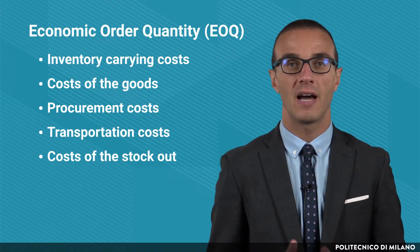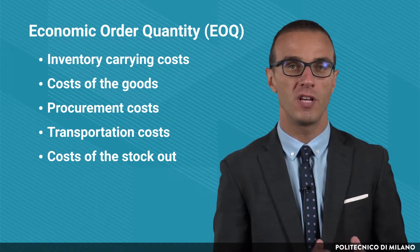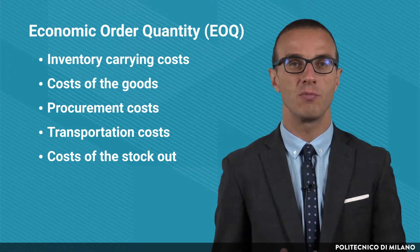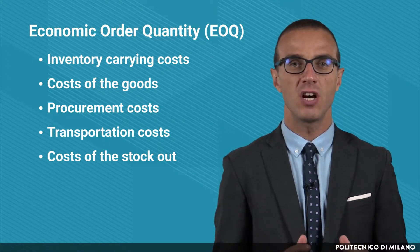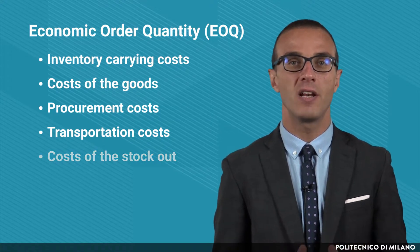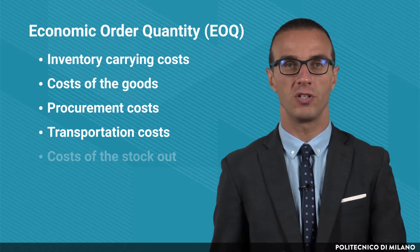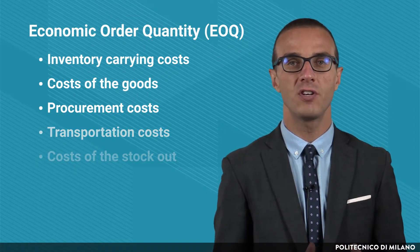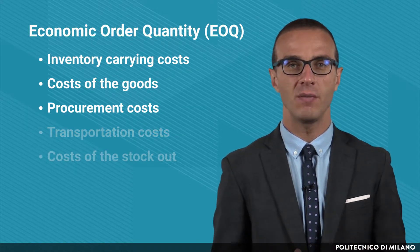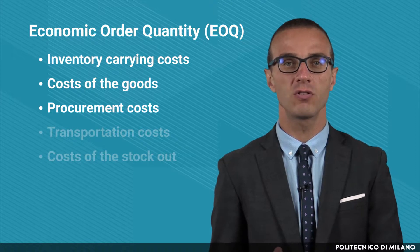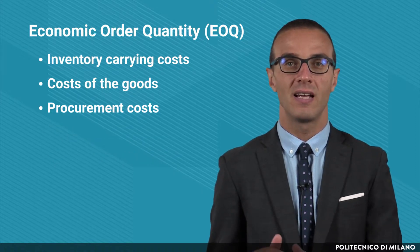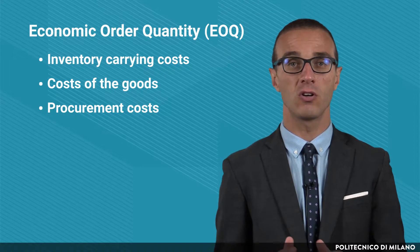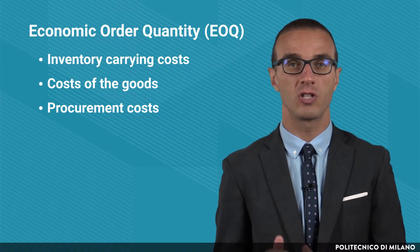Now we will see an example of EOQ optimization, which relies on three assumptions. Safety stocks do not depend on Q, the quantity reordered. Q is delivered outright. Finally, the relevant costs considered are three: namely the inventory carrying costs, the procurement costs, and the cost of the goods.